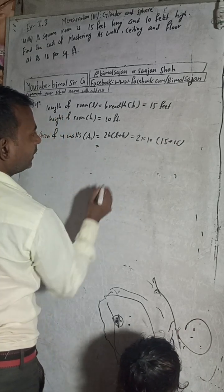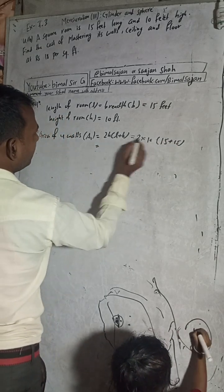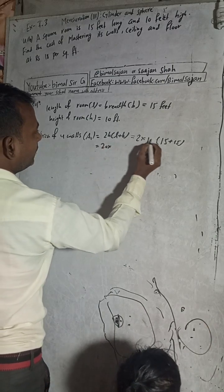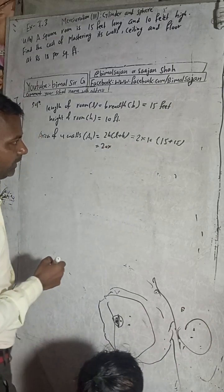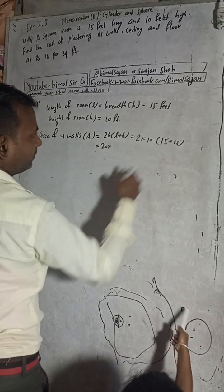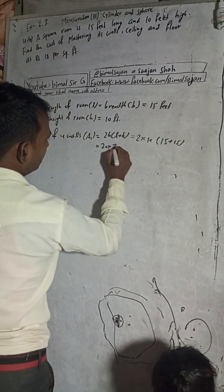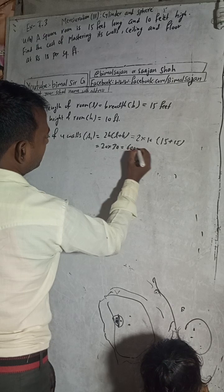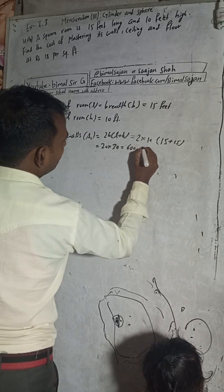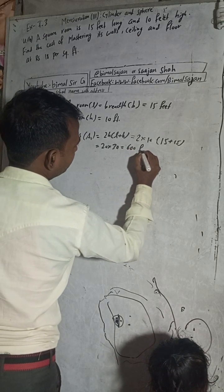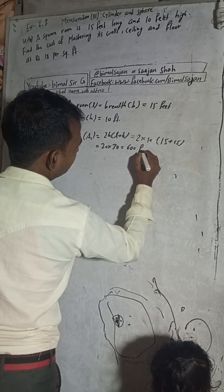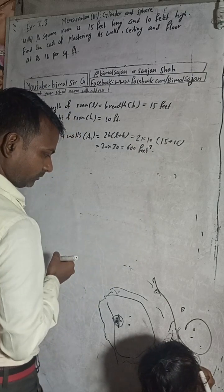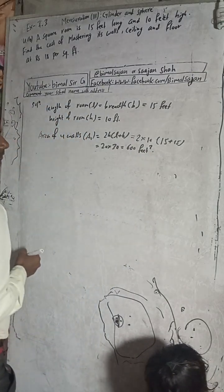So this is equal to 2 into 10 into 30, which gives 600 square feet.